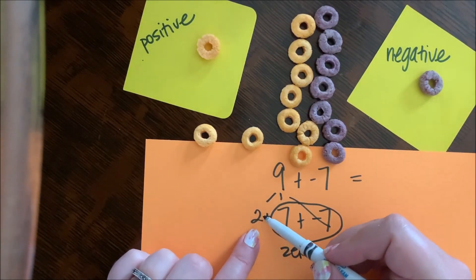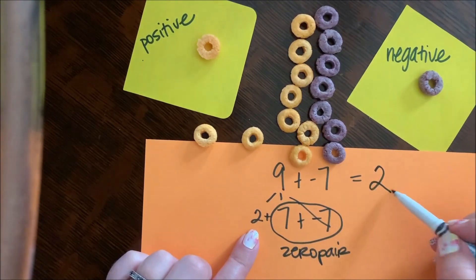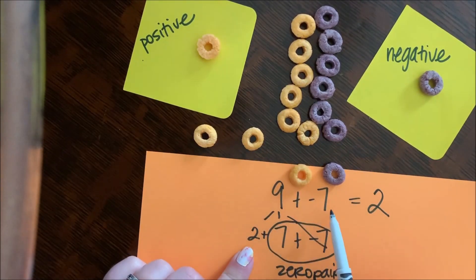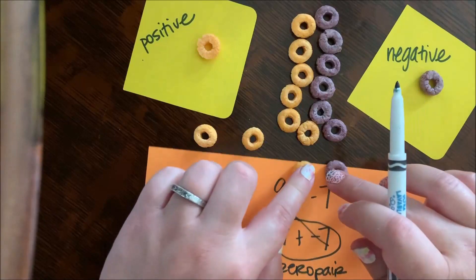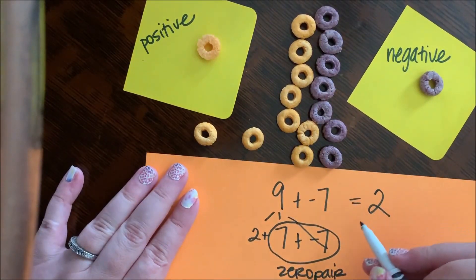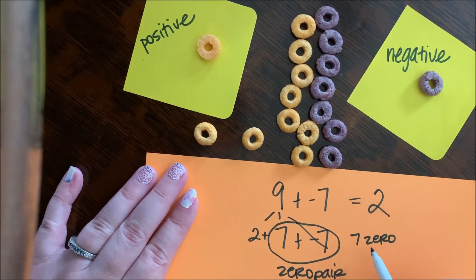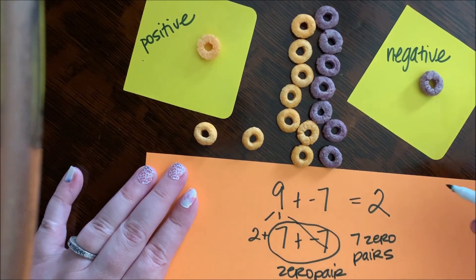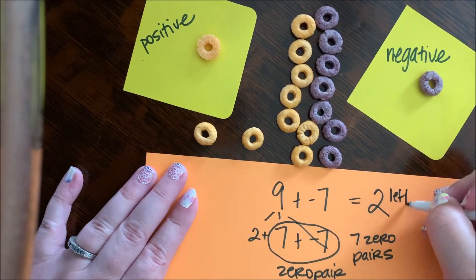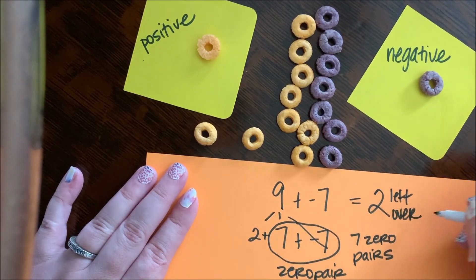So what I have left over are two positives. So nine plus negative seven is positive two, because I can make seven zero pairs and two left over.